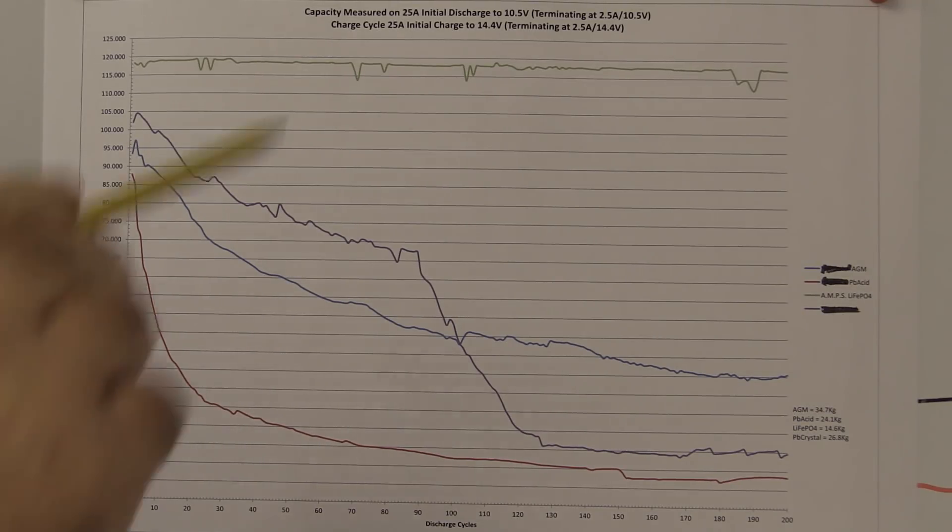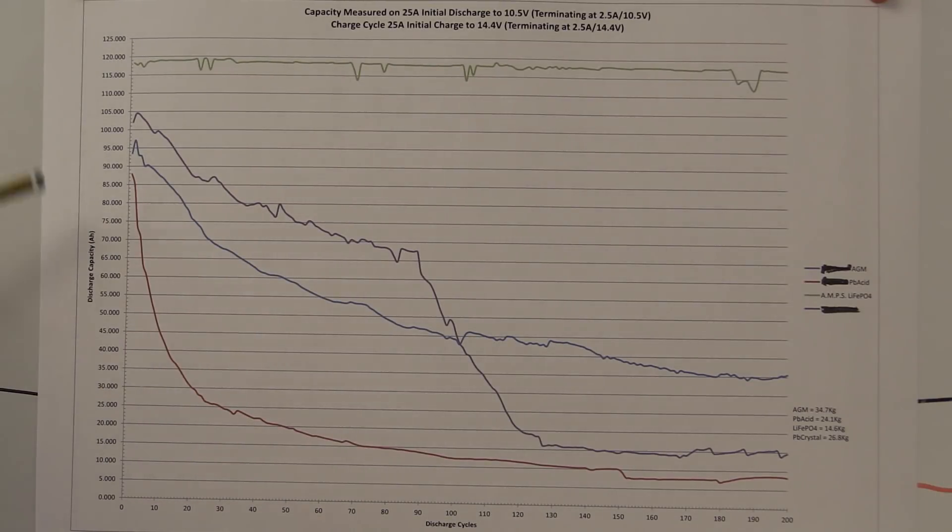So let's break down all this information. So here we have the low cost lead acid, so-called marine leisure, domestic, whatever you want to call it. They're basically starter batteries, no matter what anybody tells you. They're starter batteries with sticky labels on the front. That's those. Then we have the slightly, so this is sort of your 80, 100 pound battery. Then you're onto the AGM, which is a sort of 300 pound battery. These are the lead crystal, which is your sort of 350, 400 pounds. And then this is the lithium at, say, a thousand pounds.